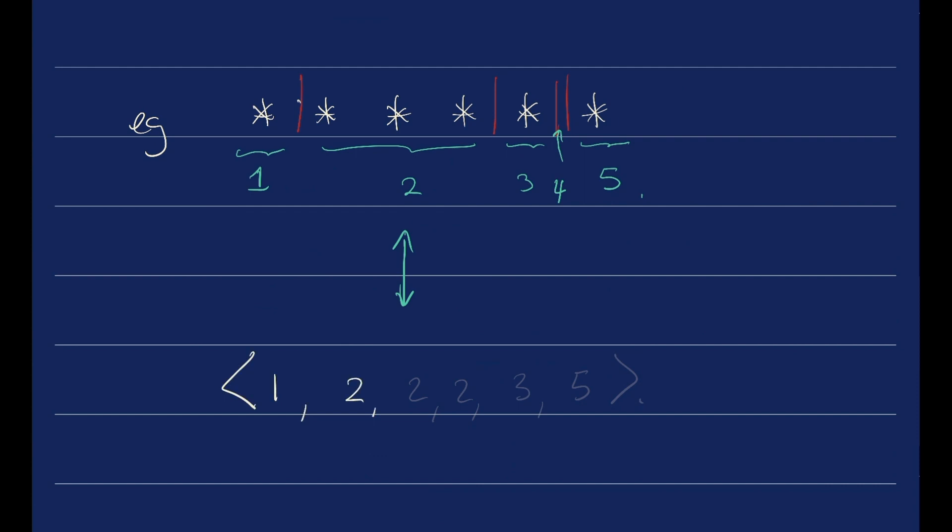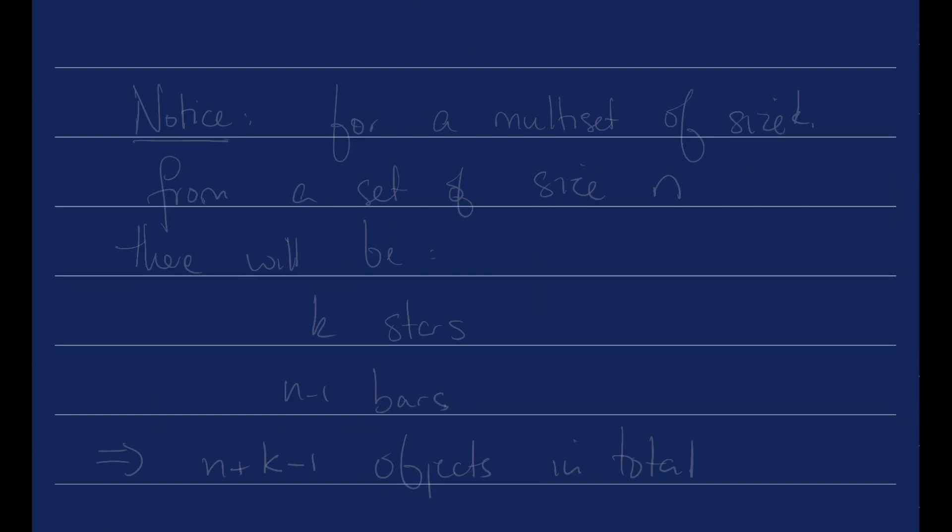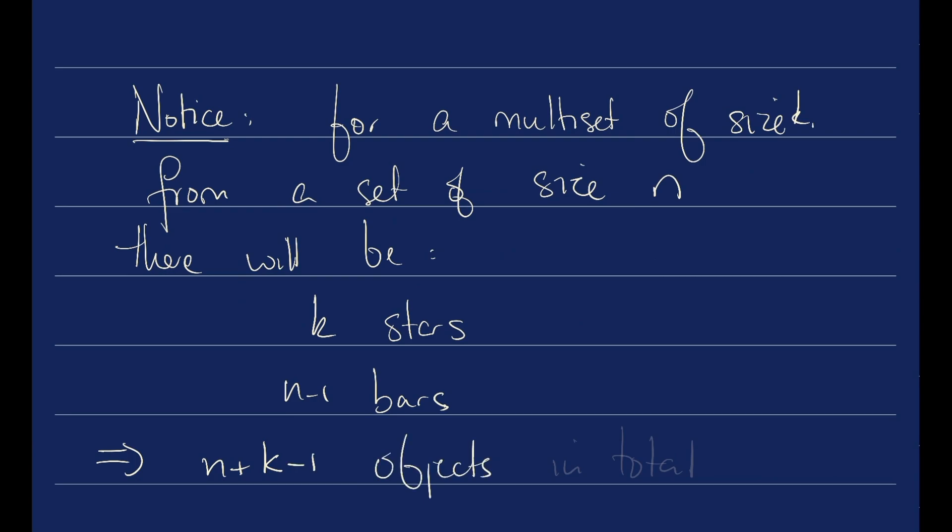The multi-set is 1, 2, 2, 2, 3, 5. And here's the important takeaway here that you could notice if we did a few more examples, which we will do. So notice, for a multi-set of size k from a set of size n, there will be k stars and n minus 1 bars to give a total of n plus k minus 1 objects.